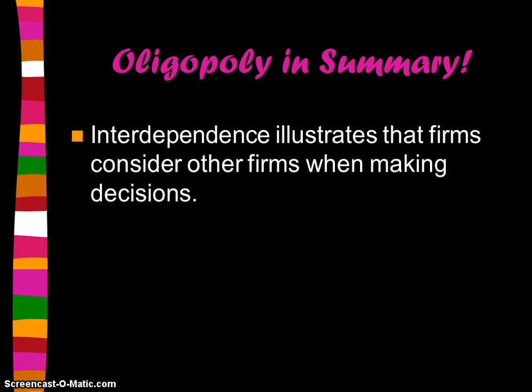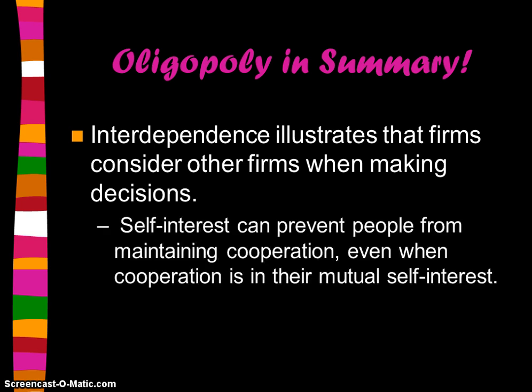Interdependence illustrates that firms consider other firms when making decisions — it's like a tennis match. Self-interest can prevent people from maintaining cooperation, even when cooperation is in their mutual self-interest. Even when it's better for Camel and Marlboro both not to advertise, they're both going to advertise anyway because they can't trust the other party to do what's best overall for everybody. So there is an incentive to cheat.